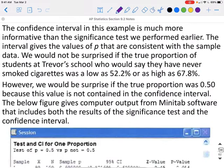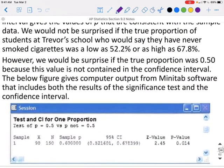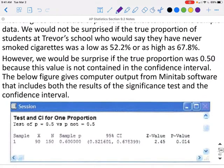The confidence interval in this example is much more informative than the significance test we performed earlier. The interval gives us the values of P that are consistent with the sample data. We would not be surprised if the true proportion of students at Trevor's high school who would say they have never smoked a cigarette is as low as 52.2% or as high as 67.8%.